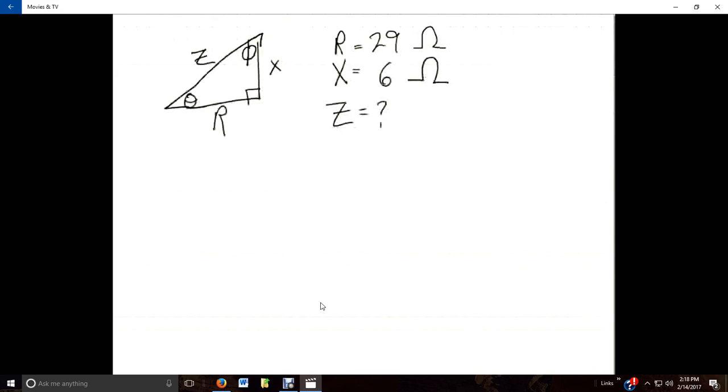Well, let's see. The impedance would be found by taking, let's see, it's the leg squared. So one leg is 29. And then the other leg squared would be 6 squared equals Z squared. And so to do this, I will bring up my little calculator.